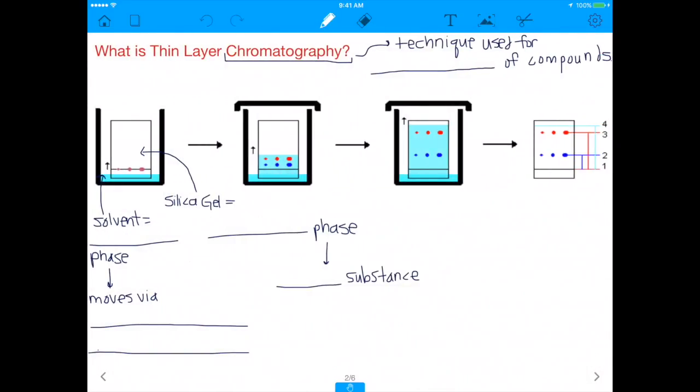So what is thin layer chromatography? Well, before we even talk about thin layer chromatography, I want you to recognize that thin layer chromatography is a type of chromatography. Chromatography in general is a technique used for the separation of compounds. And when I say separation of compounds, you can separate compounds in a wide variety of ways, and that's why there's a lot of different types of chromatography.